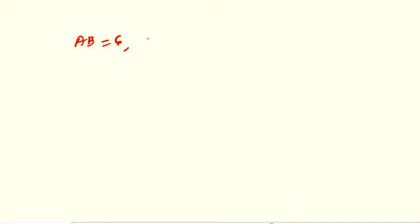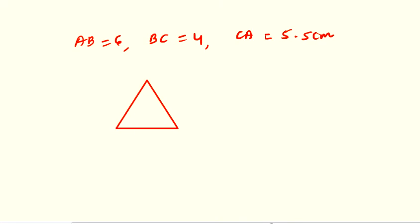The first question from Exercise 15C is: construct a triangle ABC in which AB equals 6 centimetres, BC equals 4 centimetres, and CA equals 5.5 centimetres. In this question we have to construct triangle ABC. This is the rough diagram for triangle ABC with vertices A, B, and C.